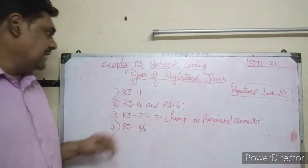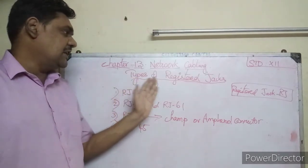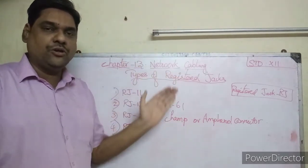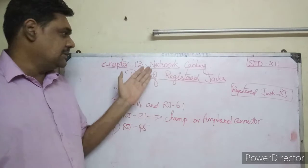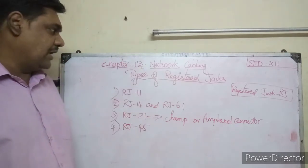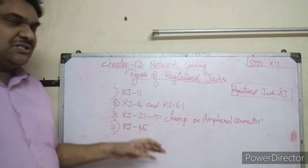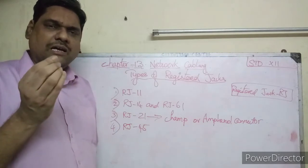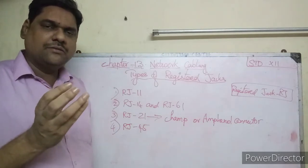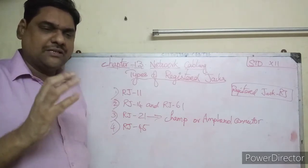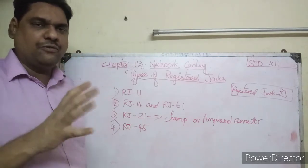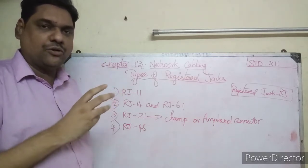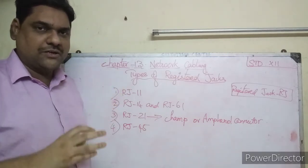Hello children, today let us see the types of registered jacks, which is the next topic in your chapter 13, network cabling. A registered jack is a standard interface — a set of rules for how wires connect to enable data communication.